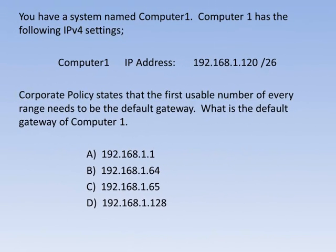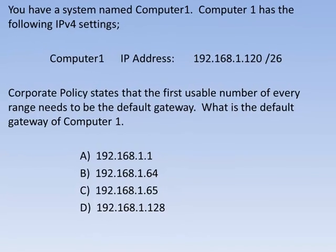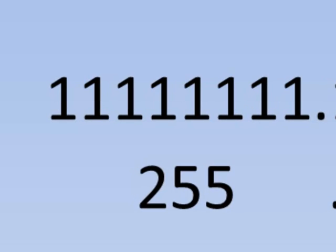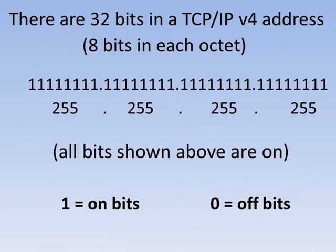The first thing we need to do to figure this out is understand a little bit about TCP/IP. There are 32 bits in a TCP/IP version 4 address. Each section between the dots is called an octet. The reason it's called an octet is because there are 8 bits in each octet. When a number is a 1, it means the bit is on. When the number is 0, it means the bit is off.